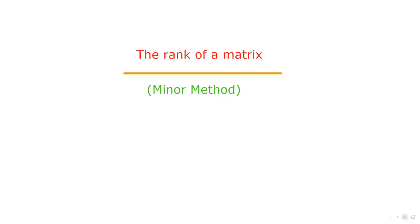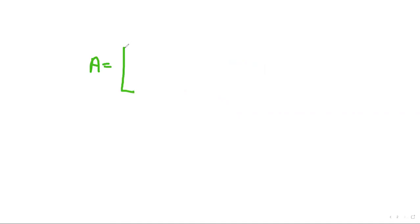So rank of a 3 by 3 matrix. Let me explain what's the rank first. A equals, let's take such a matrix, for example, 1, 2, 3, 4, 5, 6, and 7, 8, 9. Let's take such a matrix.